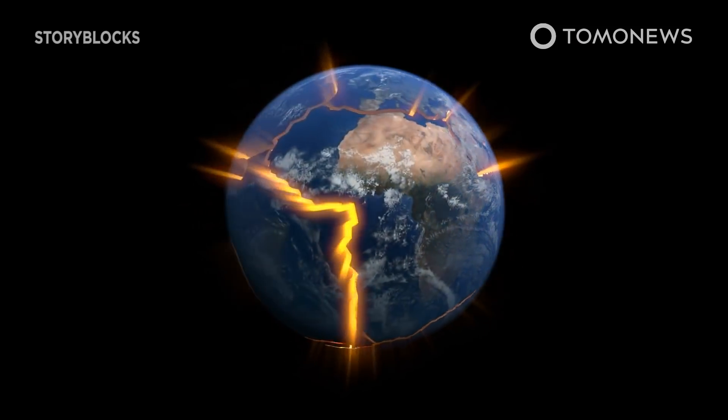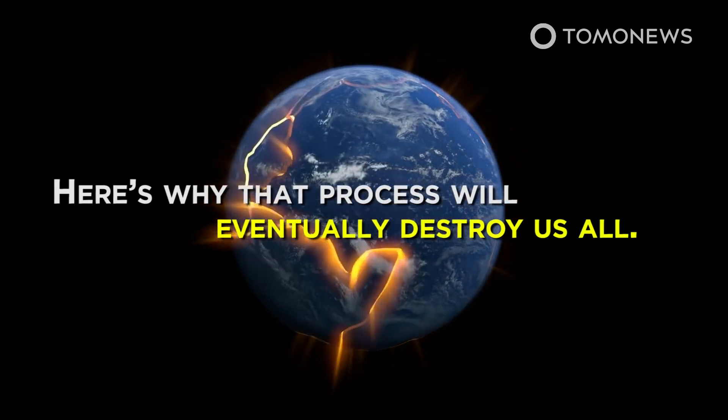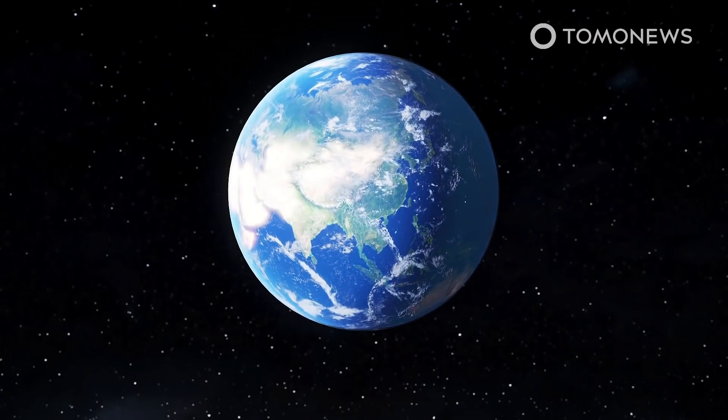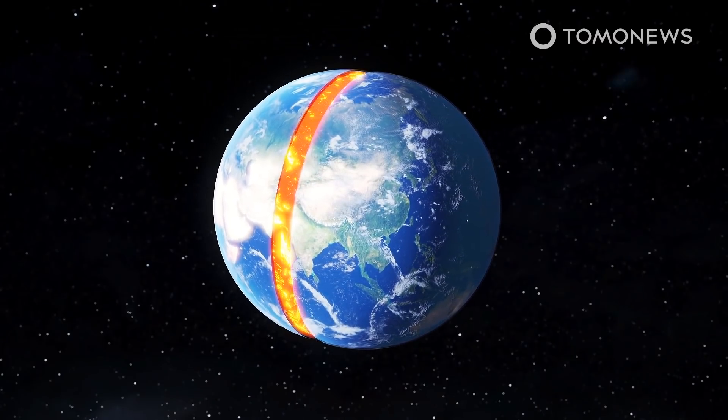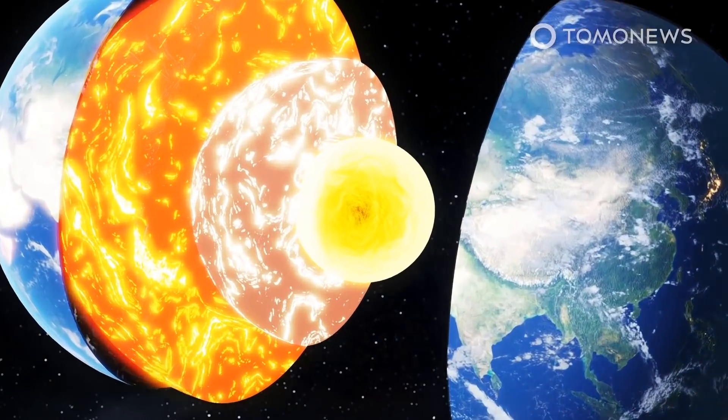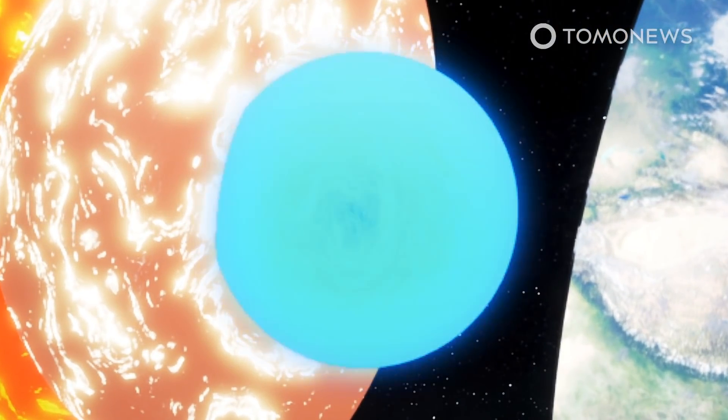The Earth's inner core is growing unevenly. Here's why that process will eventually destroy us all. Earth's inner core grows one millimeter in radius per year, but its east side beneath Indonesia is growing faster than its west beneath Brazil, because it is cooling at a faster rate.